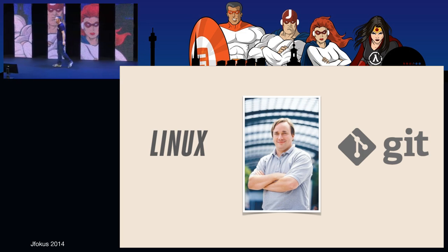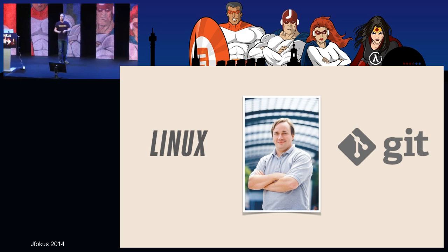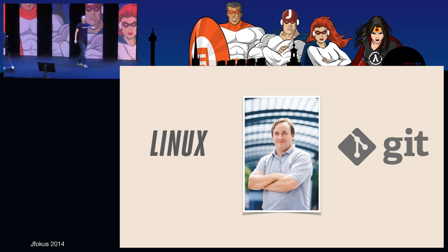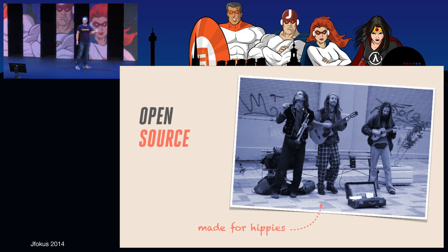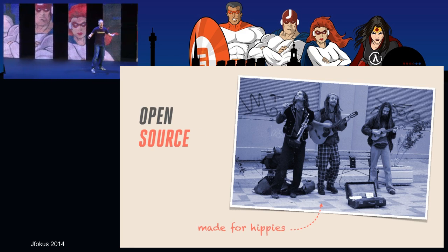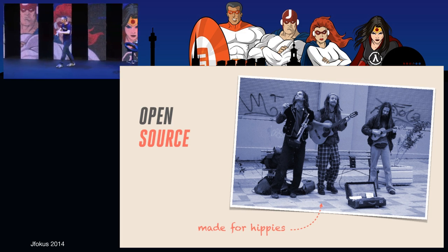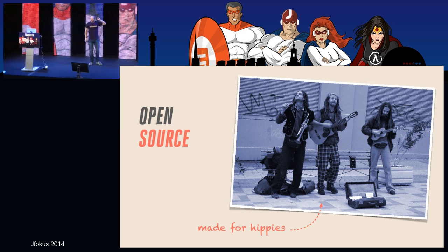Don't use Git. Maybe Linus invented it for his development of the Linux kernel — we all know that, and it works great. But it's really made for open source. And what is open source for? Open source is for hippies. Really — sharing code? We are serious developers, we don't want to share code. Open source is made for hippies and Git is made for hippies.